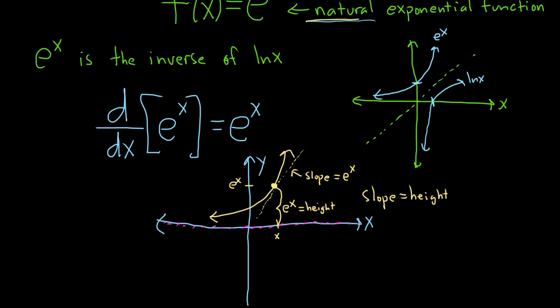E to the x is the only non-zero function in the entire world where its slope is equal to its height. It is the only function where its instantaneous rate of change is equal to the height of the graph. Hence, it is the natural exponential function. It is the natural choice for the base. That's why we call this the natural logarithm.